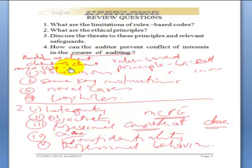You could have auditing staff that prefer MTN over GLO or vice versa. Since MTN's confidential information is held by the audit firm, before you know it, proprietary information could actually be transferred to the competition. These are issues that will arise when you are having two rivals in the same industry as clients.